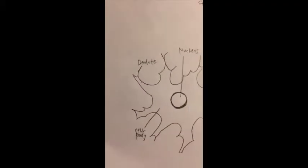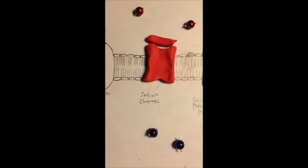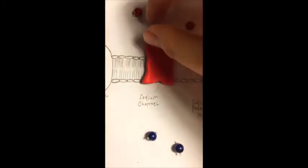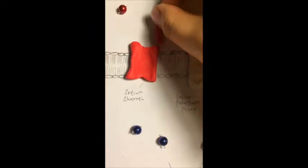A nerve impulse begins with a stimulus in the dendrite of the neuron that carries through to the axon and into the axon terminal. The impulse causes sodium channels to open up. Sodium ions undergo facilitated diffusion through the channels into the cell, making the charge in the intracellular space less negative.